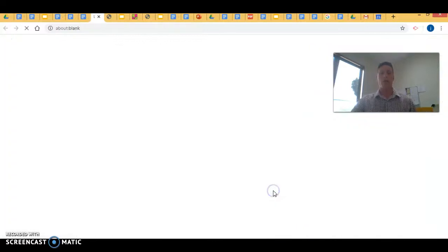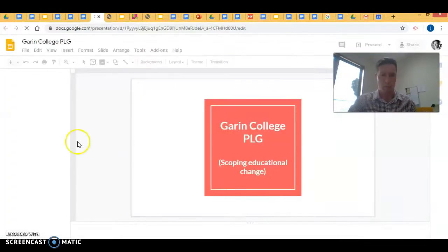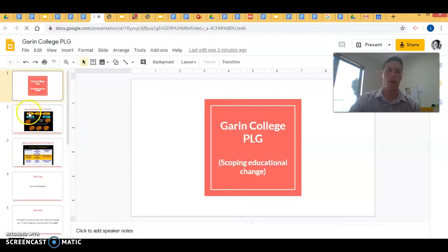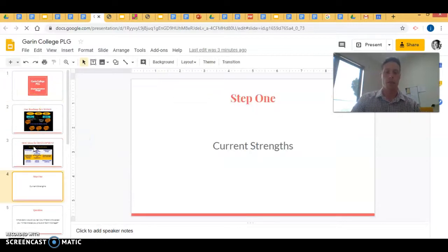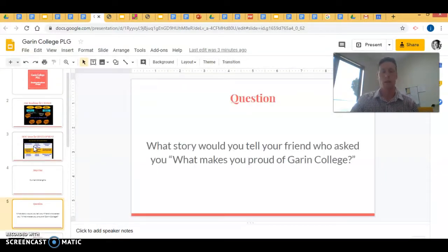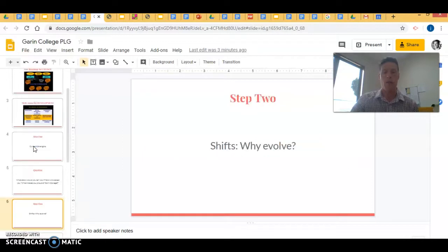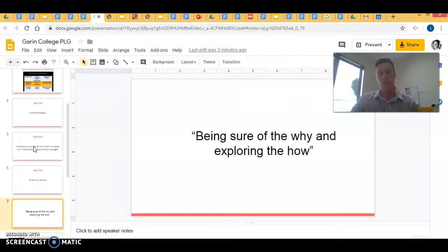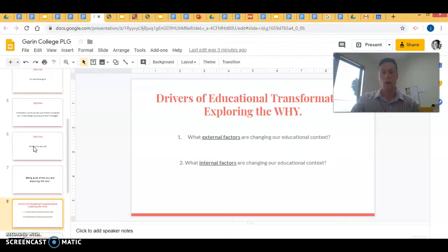If you open up this slideshow and make a copy, you're just going to be following through these steps here. The first step is to look at what are our current strengths. What makes you really proud of Gowron College? The second step is to look at why should we change and why should we evolve?